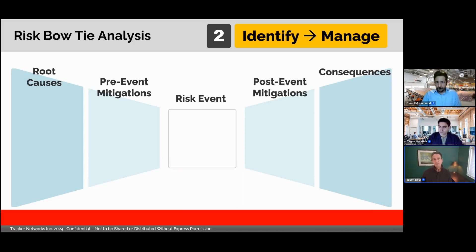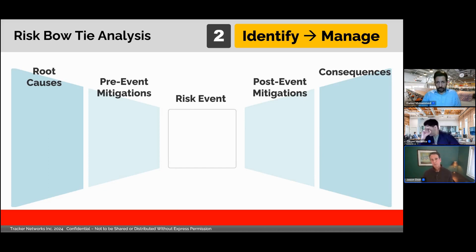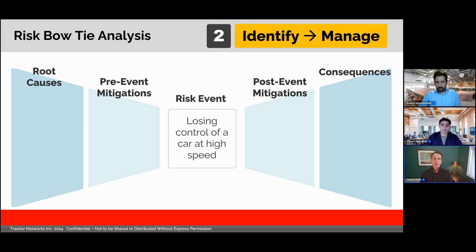With pre-event mitigations, we're trying to stop the event from happening, and with post-event mitigations, if the event does happen, we're trying to lessen the impact or get back up and running faster. To illustrate this, I'm going to use a simple everyday example of a driver losing control of a car at high speed.